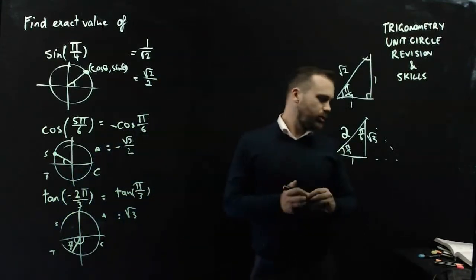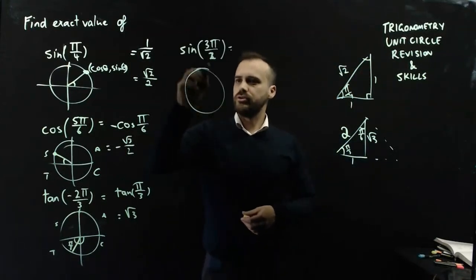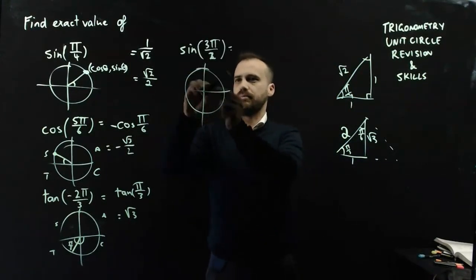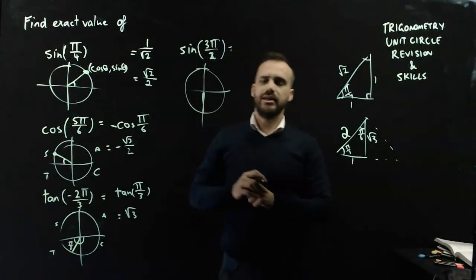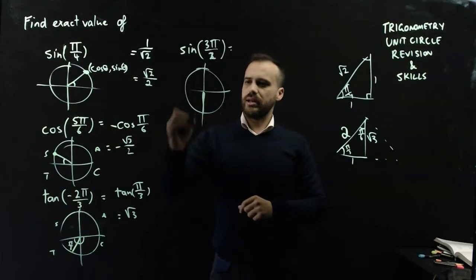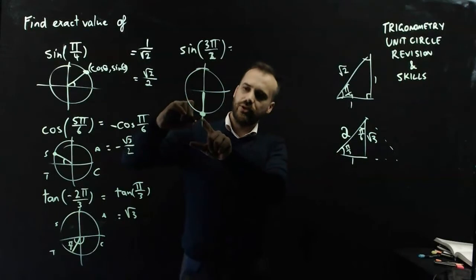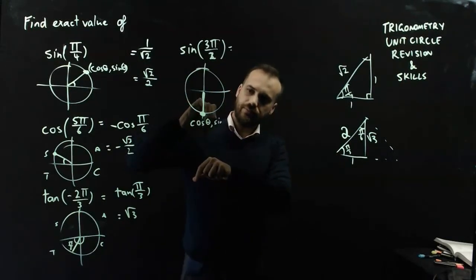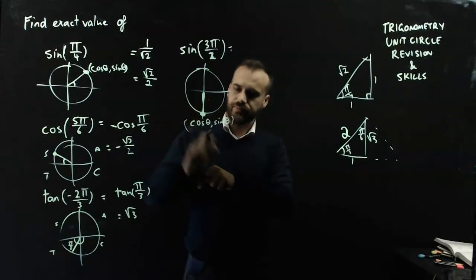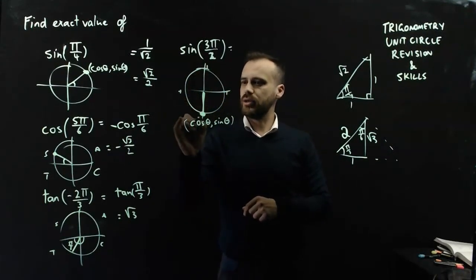Now, there is just one more that I want to take a look at. If you're asked for sin 3π on 2, drawing that, it'll be 2π on 2, 3π on 2. It's this angle here. It's important to continue understanding that the coordinates of that dot are cos θ, sin θ. This is a unit circle, 1, 1, negative 1, negative 1.